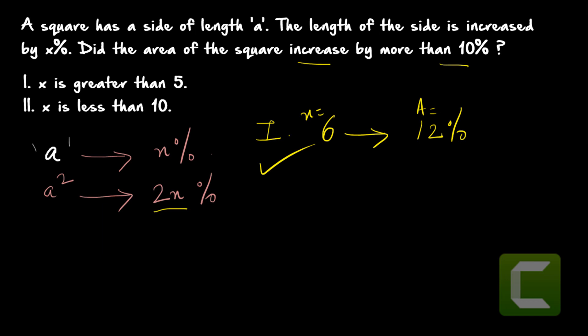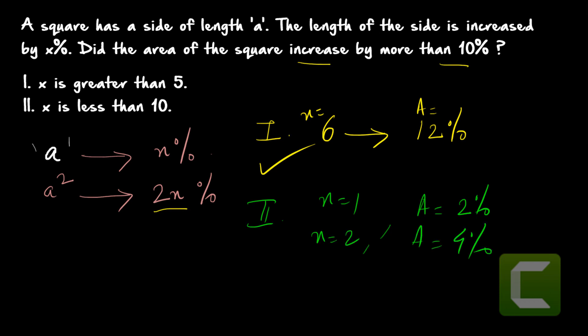You should not immediately say A is the option — you must check statement two as well. Statement two says x is less than 10, meaning x can be any value between 0 and 10. If x equals 1, area increases by only 2%; if x equals 2, area increases by only 4%; if x equals 5, area increases by exactly 10%. Only when x is greater than 5 does the area increase by more than 10%. So statement two is not sufficient to answer the question. The answer is option A — statement one alone is sufficient.